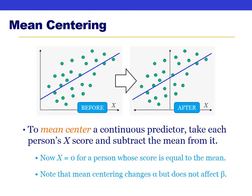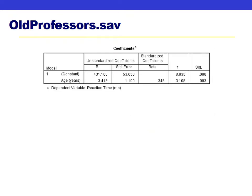The advantage of mean centering is this: without mean centering, alpha tells us the predicted Y when X equals zero. After mean centering, zero becomes the score for a person who is exactly average, so alpha tells us the predicted Y score for someone of average X. Anyone with a positive score is above average; anyone with a negative score is below average.